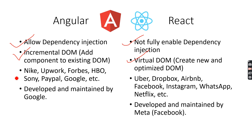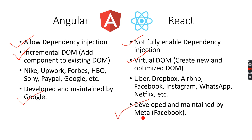Some applications that use Angular are Nike, Forbes, HBO, Sony, PayPal, and Google. React is used by Uber, Dropbox, Airbnb, Facebook, Instagram, WhatsApp, and Netflix. Angular is developed and maintained by Google, while React is developed and maintained by Meta — which is the new name for Facebook.